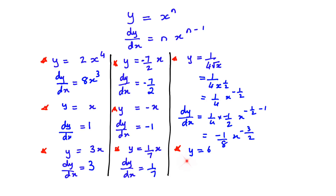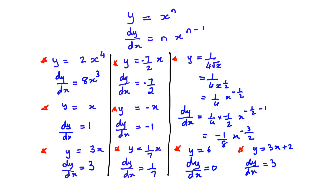For y = 6, whenever you differentiate only a number the answer is 0, so dy/dx = 0. For y = 3x + 2, the differentiation is 3 because the number before x is 3, and the differentiation of the constant 2 is 0, so we don't write it.